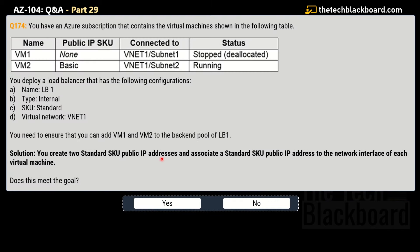Now question 174 — the last variation and the correct solution. The solution says: you create two Standard SKU public IP addresses and associate one to the network interface of each virtual machine. Note the difference from the previous questions: here we are associating to both virtual machines, not just one. Does this solution meet the goal? Yes — this is the correct solution.